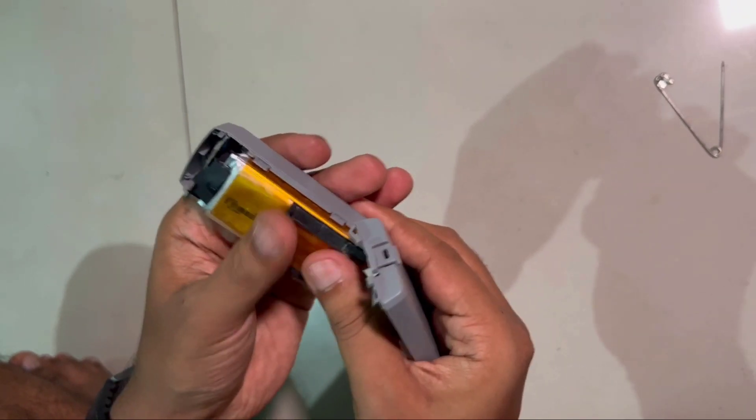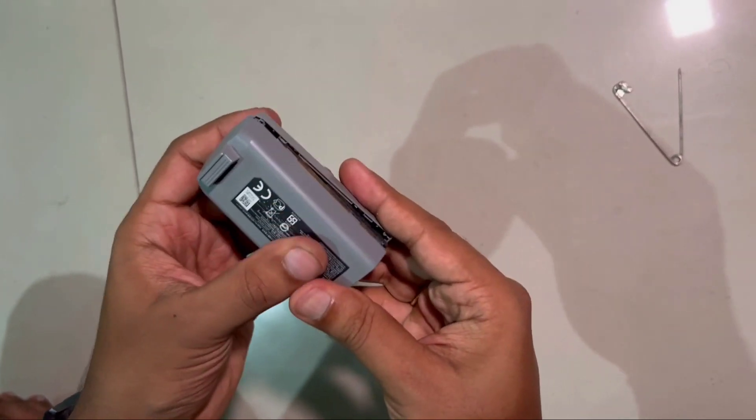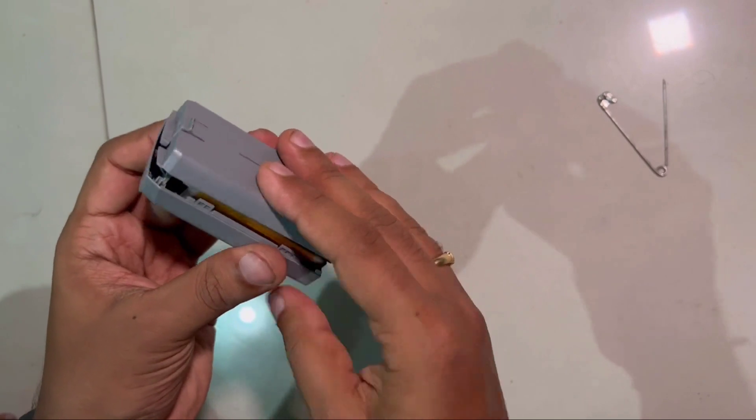Once this process is done, apply the battery panel back and the battery will be ready to use for the next 45 to 50 days. Maximum, you can use this battery for 60 days.